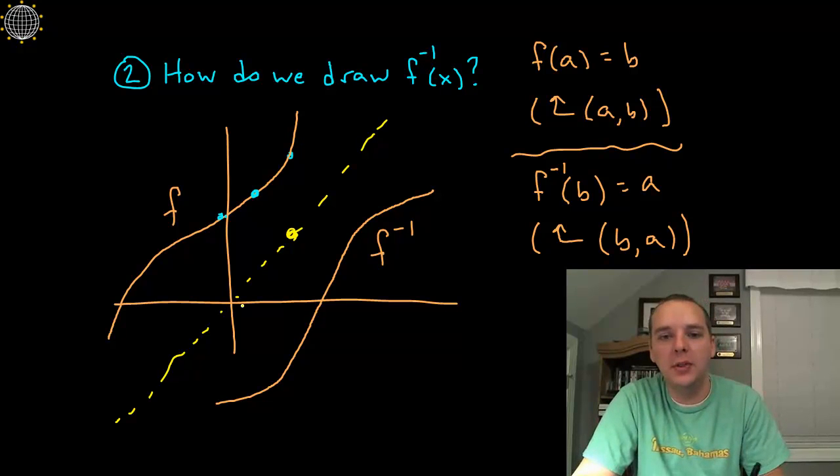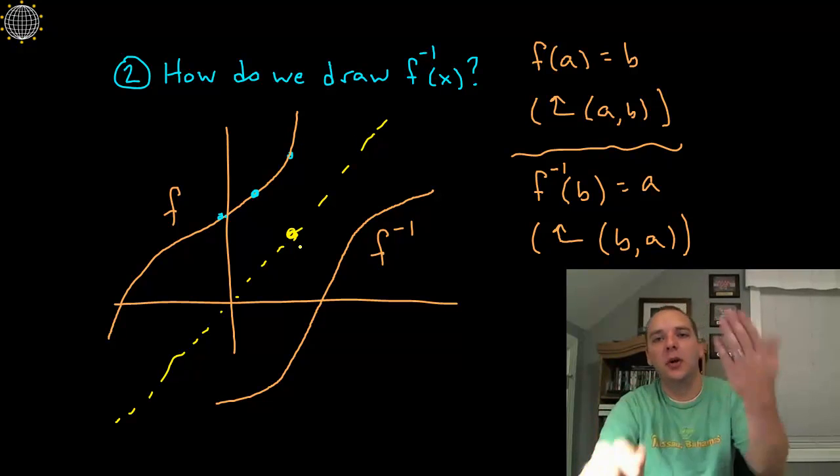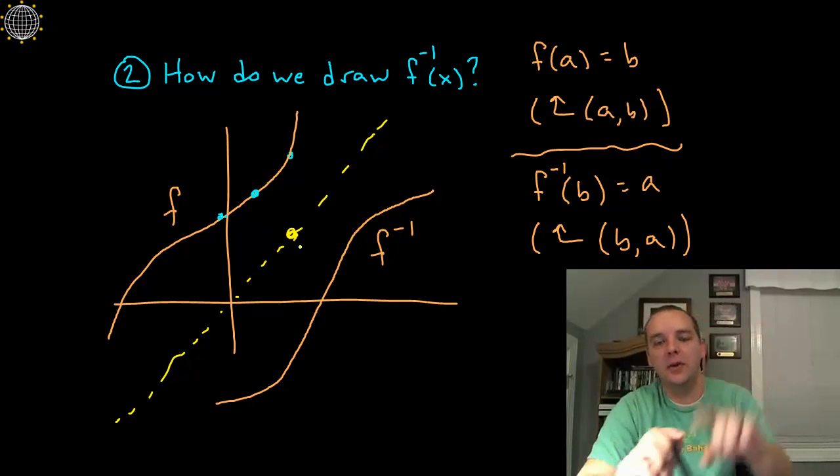So you could, you would think of these as like pivot points, so you're reflecting it across that forty five degree line.